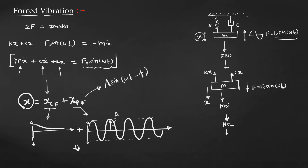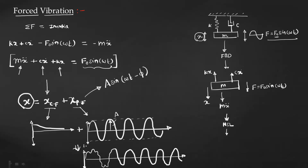The final waveform shows an initial transient region, observed because of the complementary function, and after some time the waveform becomes stable with constant amplitude. We assume the complete solution x is only the particular integral, because the complementary function vanishes after some time duration. For the remaining time, the mass oscillates only according to the particular integral equation.